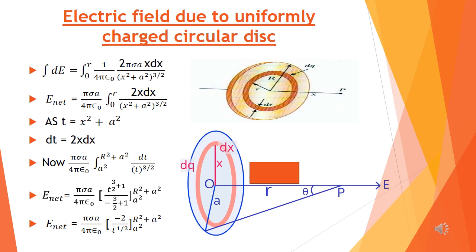To find the net electric field we need to integrate. The limits of integration will be from 0 to R, where R is the radius of the disk. So: E = ∫₀ᴿ (2πσa · x dx) / (4πε₀ · (x² + a²)^(3/2)). Taking constants outside the integral: E = (πσa / 4πε₀) · ∫₀ᴿ (2x dx) / (x² + a²)^(3/2).